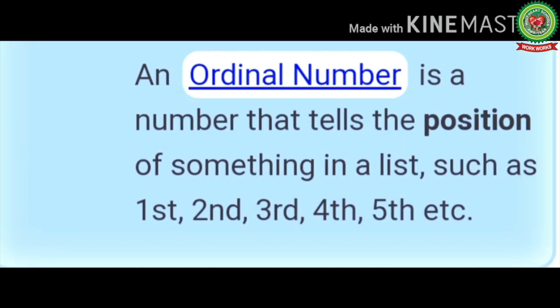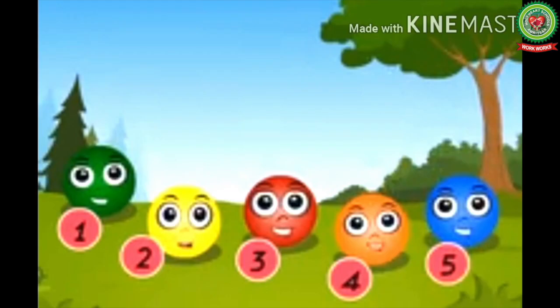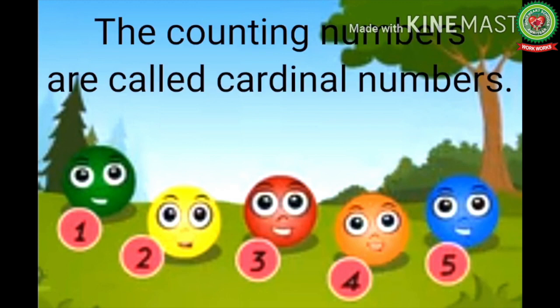Whereas an ordinal number is a number that tells the position of something in a list, such as 1st, 2nd, 3rd, 4th, 5th, etc. When we want to count the number of footballs — how many footballs are there — like 1, 2, 3, 4, 5, these counting numbers are called cardinal numbers.